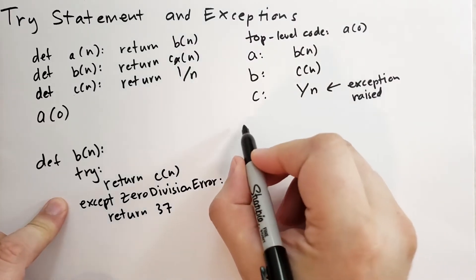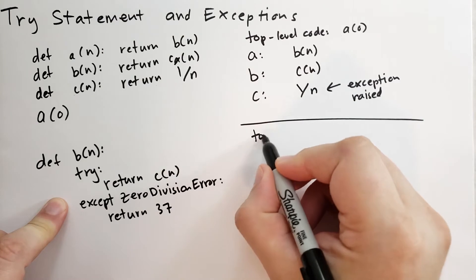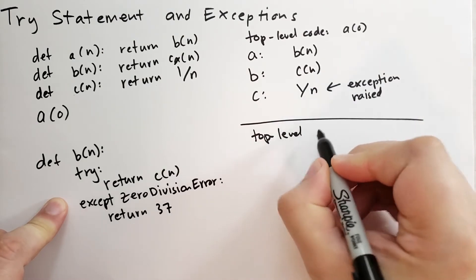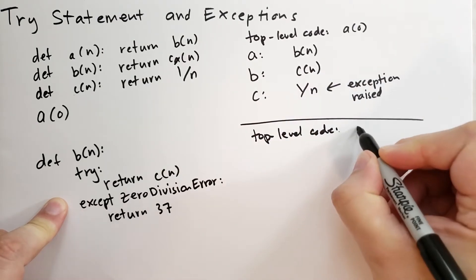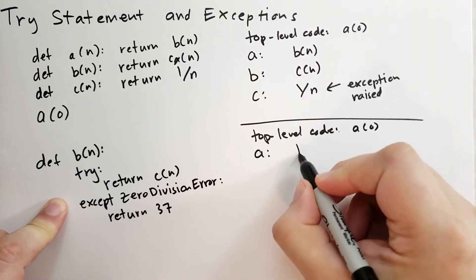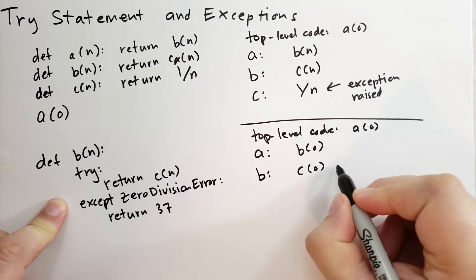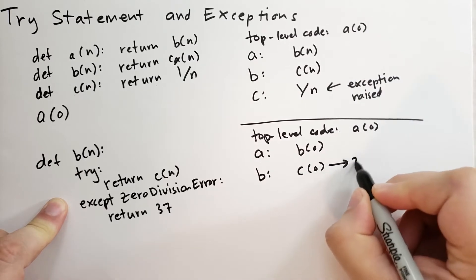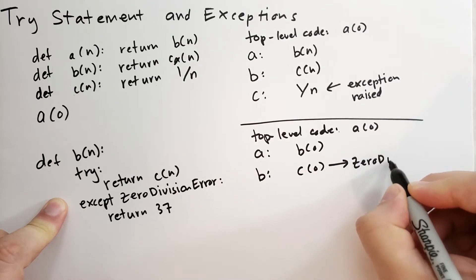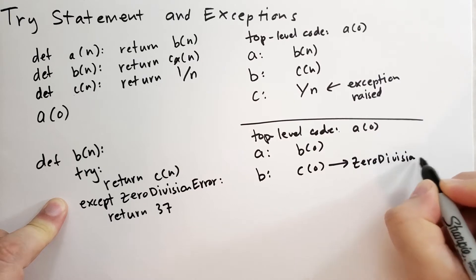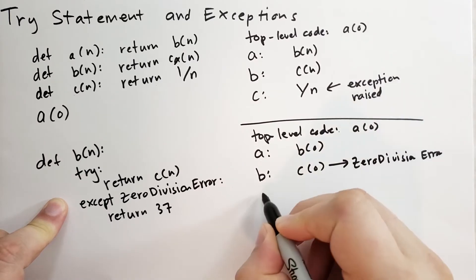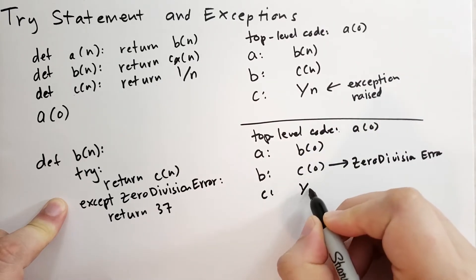With this new call stack, what's going to happen is the following. So we have the top-level code. It's calling a of 0. a is calling b of 0. b is calling c of 0, but it's going to handle the zero division error. And then c is going to divide 1 by 0.